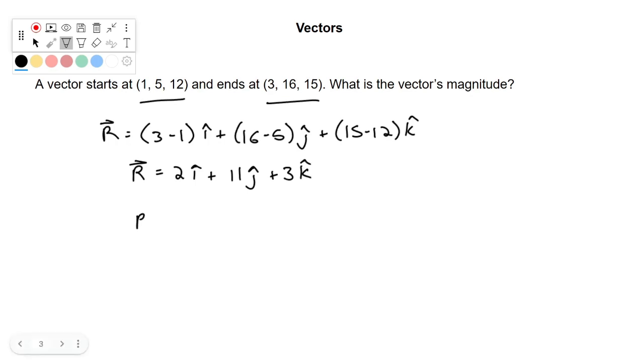And if we want the magnitude of that, we're in three dimensions, we would apply Pythagorean's theorem in three dimensions. So we want the square root of 2 squared plus the square root of 11 squared plus square root of 3 squared. So this is going to be 4 plus 121 plus 9. It's going to be the square root of 134. And this is going to be our magnitude.